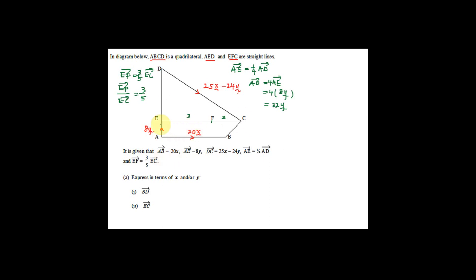For Part A, we need to find BD. From the diagram, BD equals BA plus AD. BA is negative 20x because it's the opposite direction of AB, which is 20x. We already found AD equals 32y. So BD equals negative 20x plus 32y.